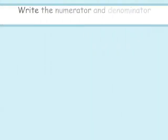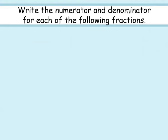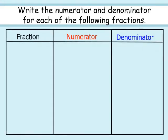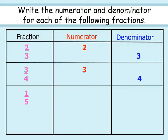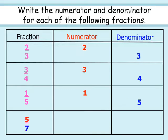Write the numerator and denominator for each of the following fractions. First fraction is 2 by 3: 2 is the numerator and 3 is the denominator. Second fraction is 3 by 4: 3 is the numerator and 4 is the denominator. Next fraction is 1 by 5: 1 is the numerator and 5 is the denominator. Fourth fraction is 5 by 7: 5 is the numerator and 7 is the denominator.